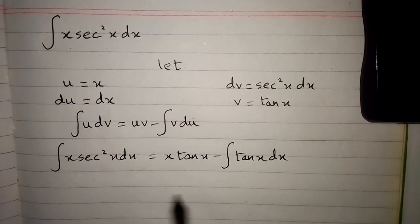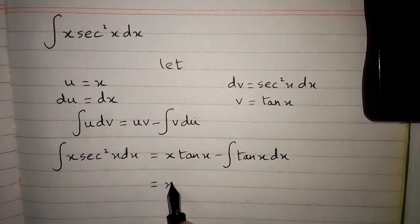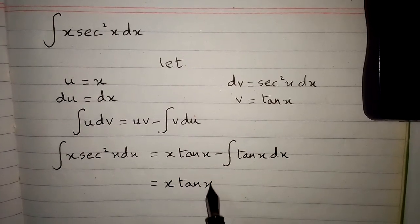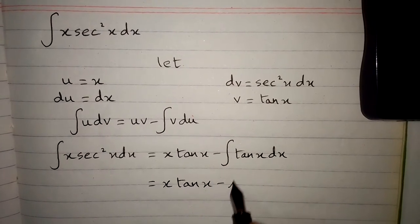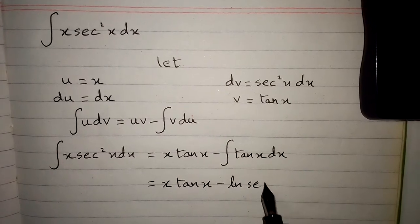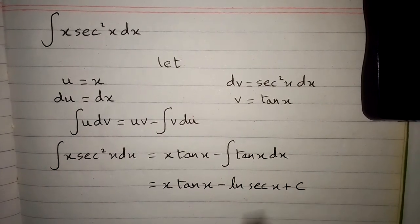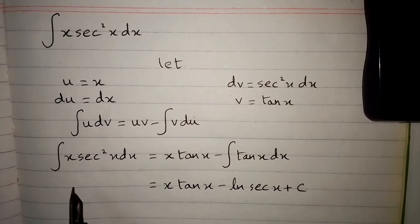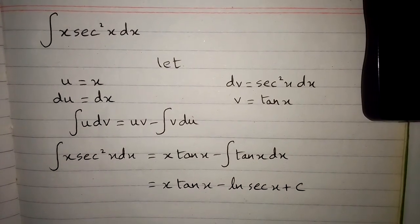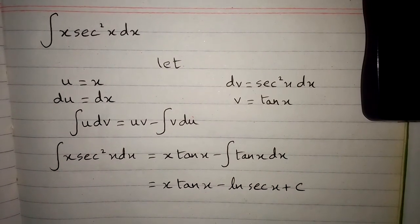We have x times tan x minus the integral of tan x. The integral of tan x is ln|sec x| plus C. So the integral of x times sec squared x dx is equal to x times tan x minus ln|sec x| plus C.